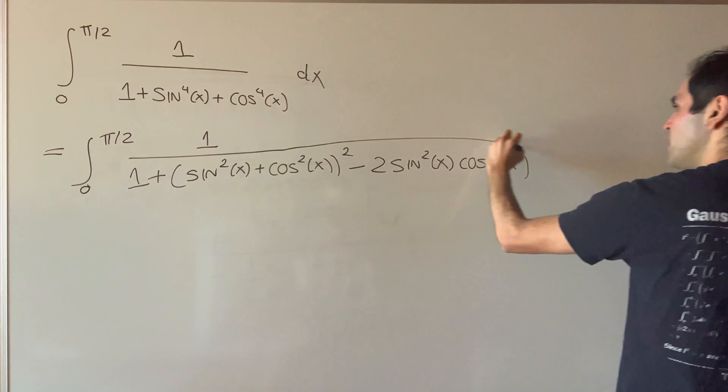And the beautiful thing is, remember, sine squared plus cosine squared is just one, so in the end we get the integral from zero to pi over two of one over — so one plus one — which is two.